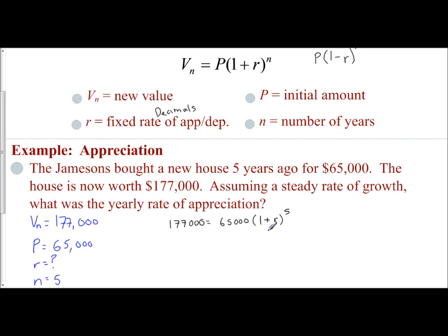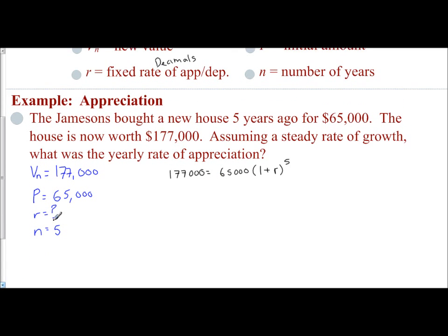We need to figure out how to solve. Our variable is contained inside that parentheses, which is being raised to the fifth power. So I have to isolate that object first. I'm going to divide both sides by the coefficient, $65,000. That gets rid of my coefficient, and I'm left with $177,000 over $65,000 equals one plus R to the fifth power.